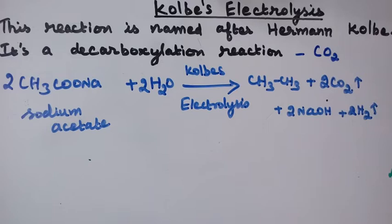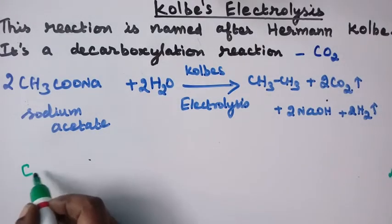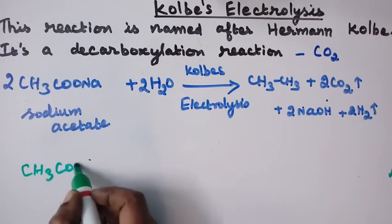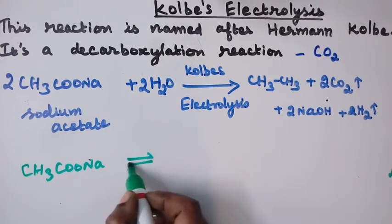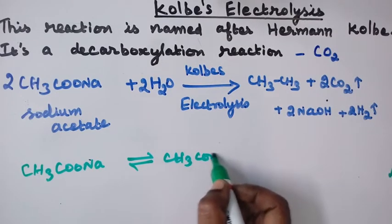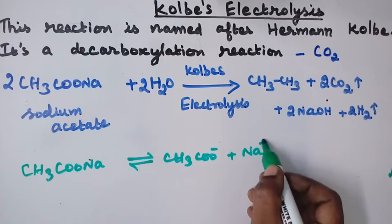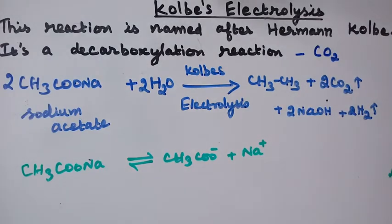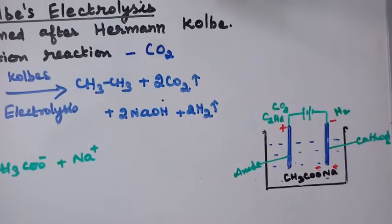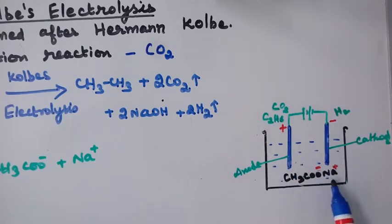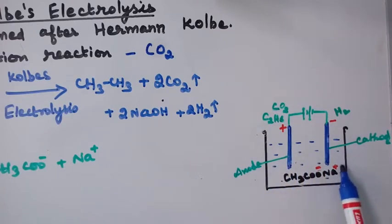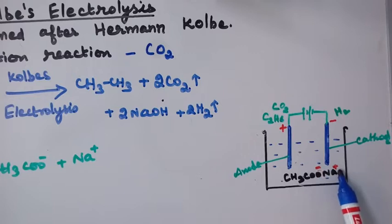During electrolysis, sodium acetate ionizes as CH3COO⁻ and Na⁺. In an electrolytic process, the electrolytic vessel has a cathode and an anode. The electrolyte is sodium acetate. At the anode, oxidation takes place, and at the cathode, reduction takes place.